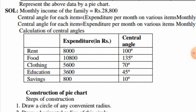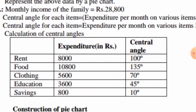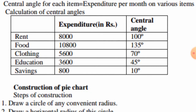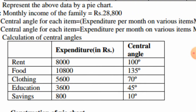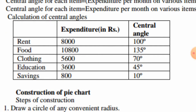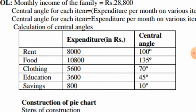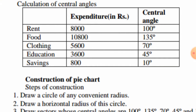Similarly, for food: 10,800 divided by 28,800 multiplied by 360 gives 135 degrees. For clothing: 5,600 divided by 28,800 multiplied by 360 equals 70 degrees. For education: 3,600 divided by 28,800 multiplied by 360 equals 45 degrees.